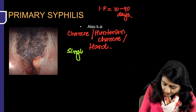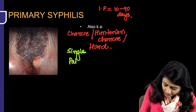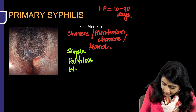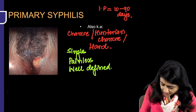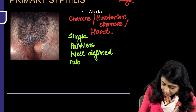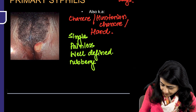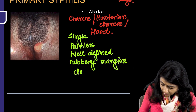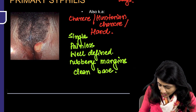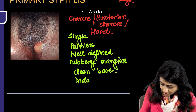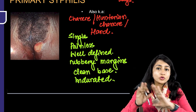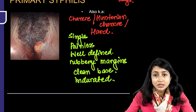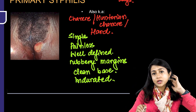The characteristics of this ulcer: it is a single, painless, well-defined ulcer with rubbery margins, a clean base, and when you feel it, it is indurated. These features help you differentiate different types of genital ulcers, and all these features are important.